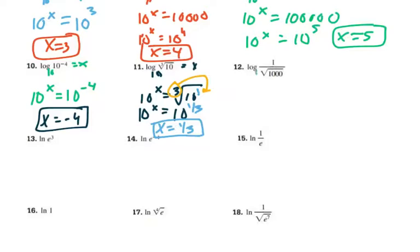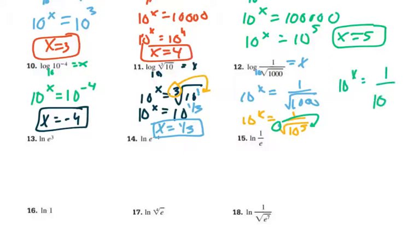Next one has a base 10. So 10 to the x is going to equal 1 over the square root of a thousand. But 1,000 can be rewritten as a power of 10. So 10 to the 3. And then, of course, this is a square root. So we can bring that squared into the denominator of the 3 there. And so we have 10 to the x equals 1 over 10 to the 3 halves. But then, of course, to bring it up, we get 10 to the x equals 10 to the negative 3 halves. And so x equals negative 3 halves, or negative 1.5.